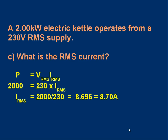And what's the RMS current? Using P = V × I with RMS values: 2,000 = 230 × I_rms, so the RMS current is 2,000 / 230, which to 3 significant figures is 8.70 amps.